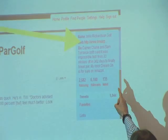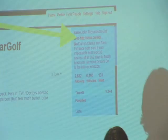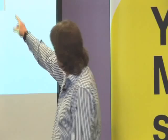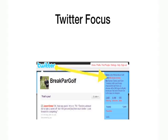Then I have a little bit of text here: Darren Clark and Sam Torrance both said that it was impossible, but I took 33 strokes off in 362 days to finally break par. My book Dream On is for sale on Amazon. What I'm trying to do there is not just say go somewhere else and buy my stuff — that's a credibility thing. I'm using Sam Torrance and Darren Clark because they did say that. The name of the book is off a line that Sam Torrance said to me. So I'm trying to establish credibility and some actual facts within that.